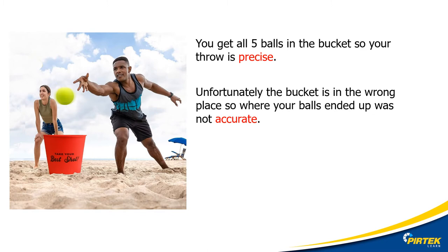Let's look at being precise. Imagine you have five balls and you throw all five into a bucket — your throwing is precise. You will only be accurate if the bucket was in the right place. The easiest way to remember the difference is: preciseness is the ability to repeat, and accuracy is how close you got to the intended target.